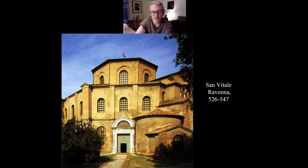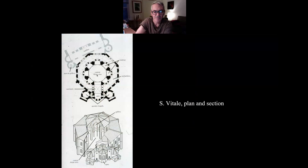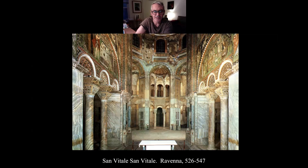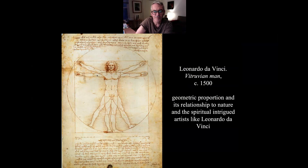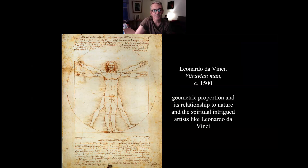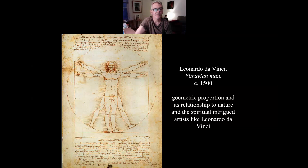You can see the acceleration of scale from Brunelleschi's San Lorenzo to Alberti's San Andrea, just within the same century. Central plan churches — this is a church from Ravenna, which is more like a Byzantine church, but you can see this circular format.